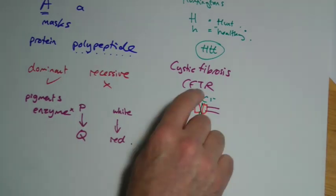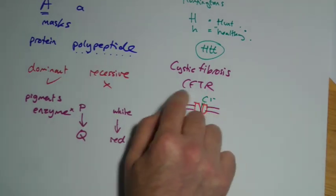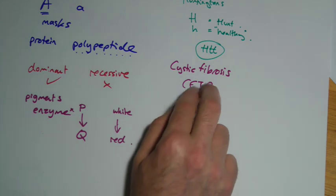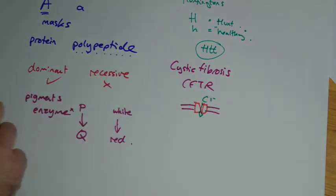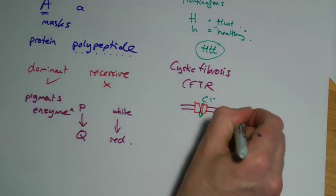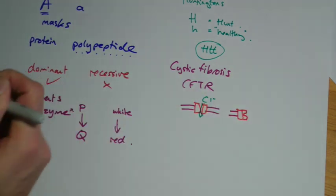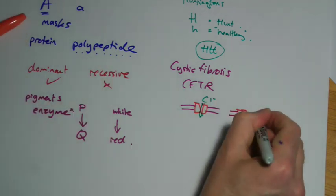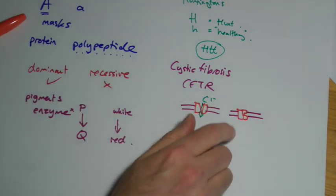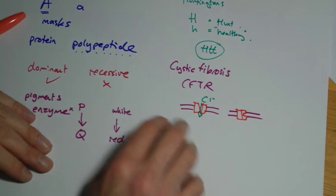Anyway, the point is, in this case, if you get the mutation of this, and there are several mutations you get, but basically stops this working because you get the wrong shape. So, you know, maybe the shape has gone wrong and it doesn't work as it should do. And we're not transporting these chloride ions around as we should.